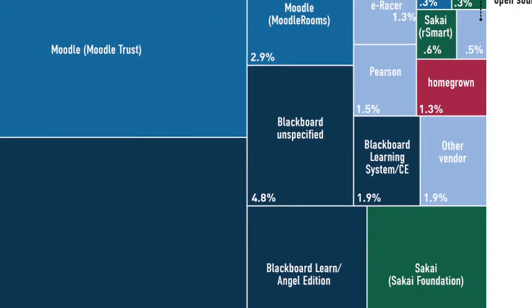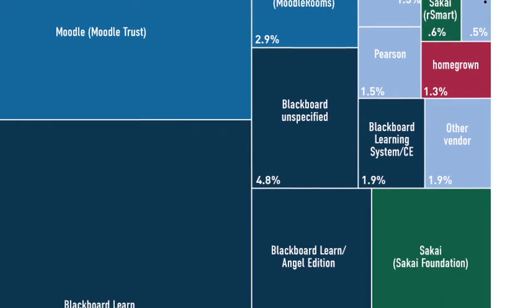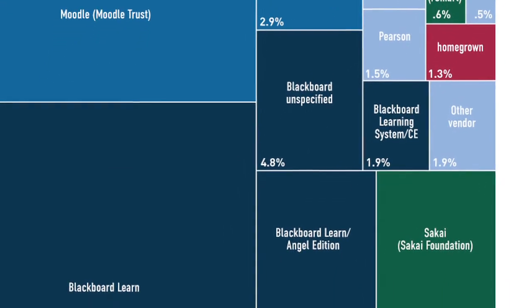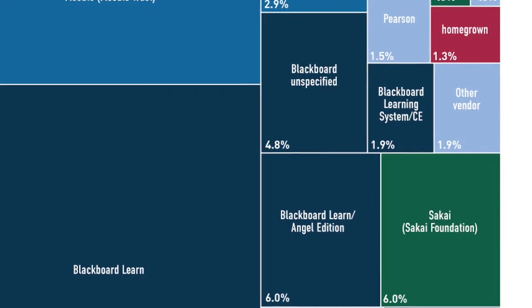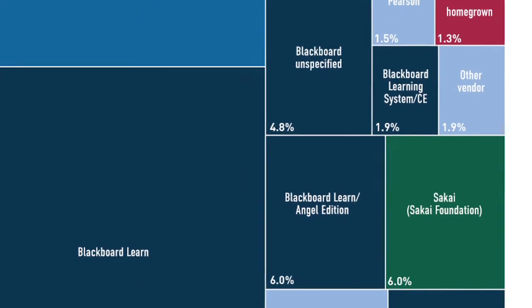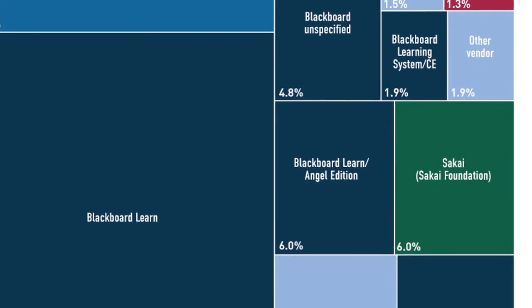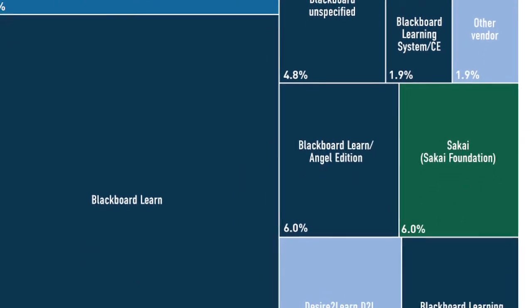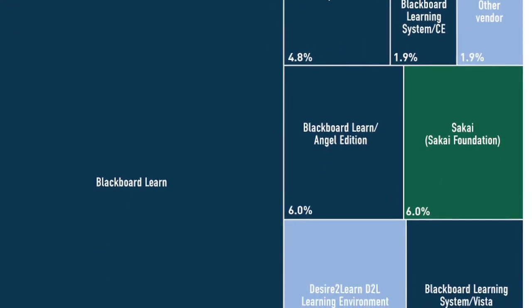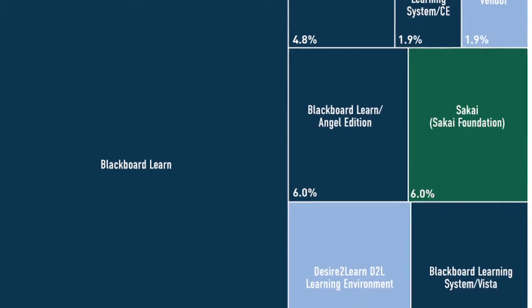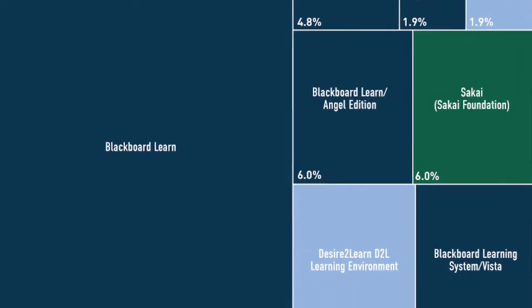26% of institutions use open source options for these application systems. Moodle and Sakai are among the top five LMS solutions being used today. These are only a few examples of important metrics from CDS 2012.